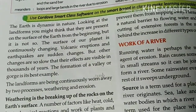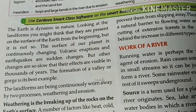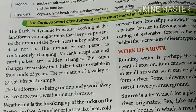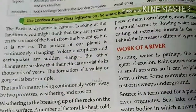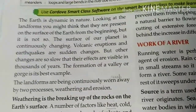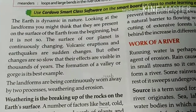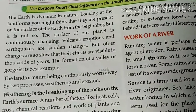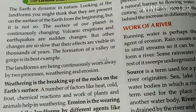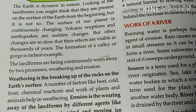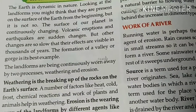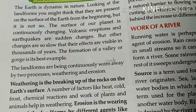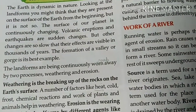Looking at landforms, you might think they are fixed on the surface of the earth, but you will see that the surface of our planet is continuously changing. Changes like volcanic eruptions and earthquakes are sudden changes, but rivers, glaciers, and winds cause long-term changes.